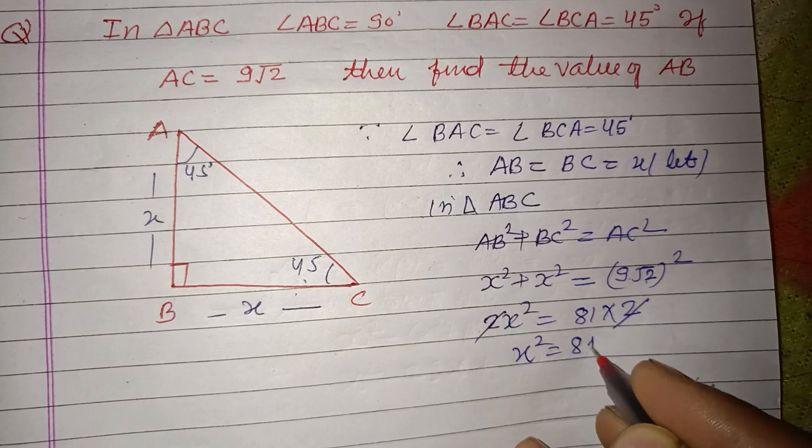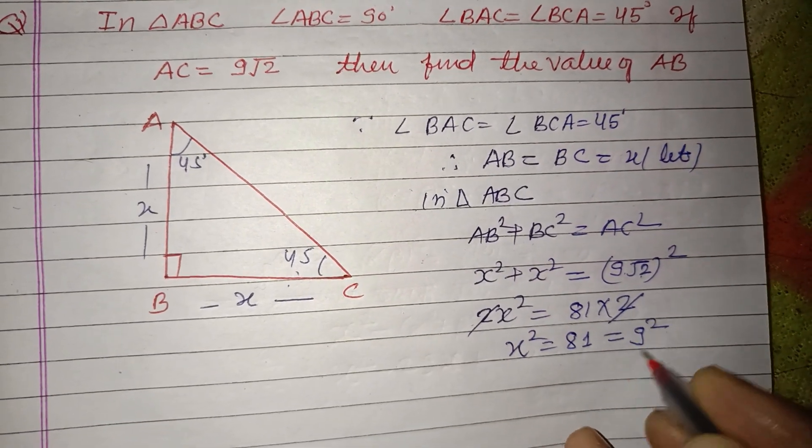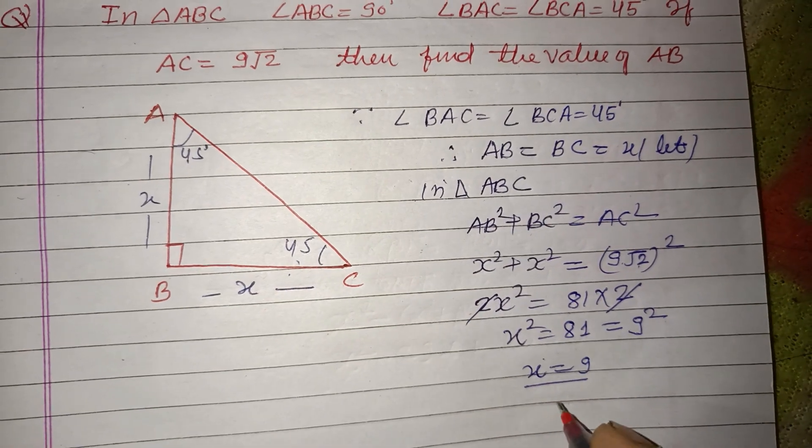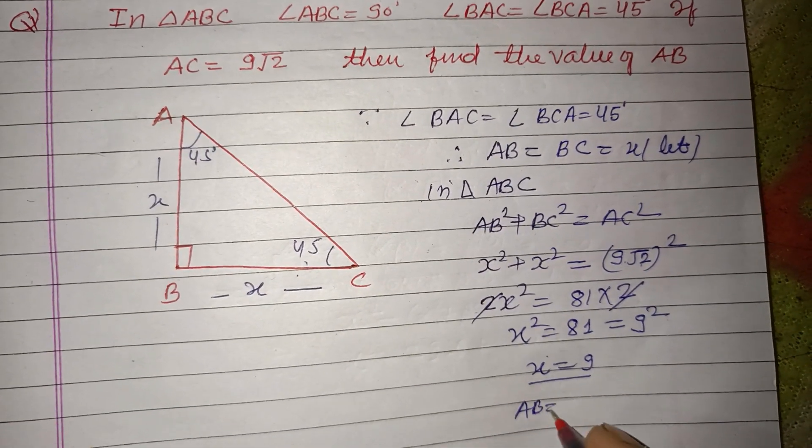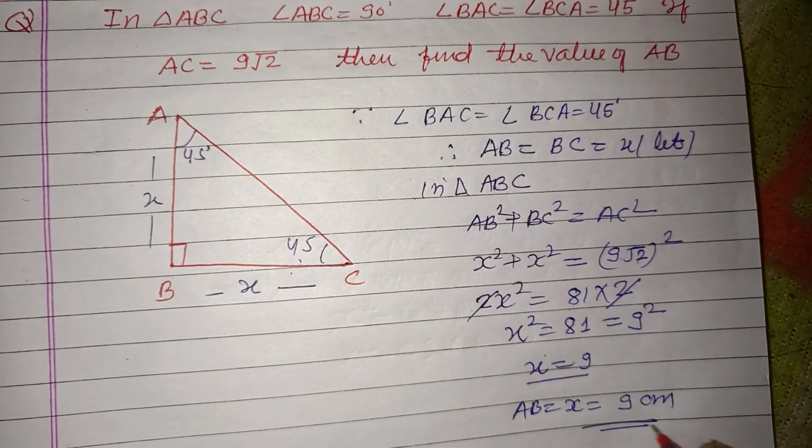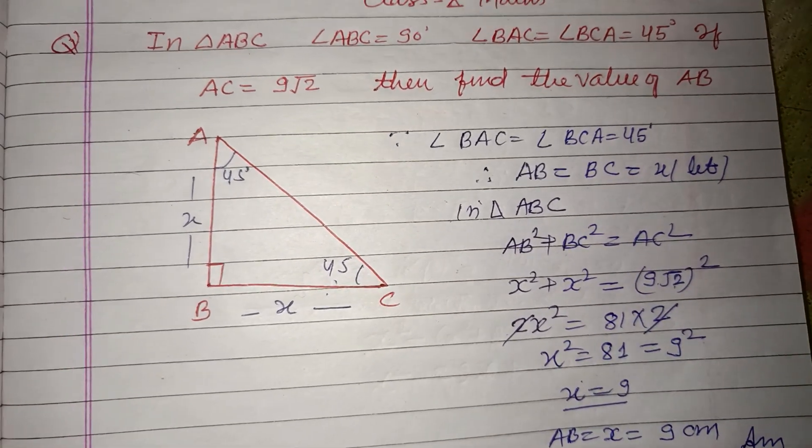x² equals 81, so x equals 9. Therefore AB, which is also equal to x, is 9 centimeters. So this is our answer.